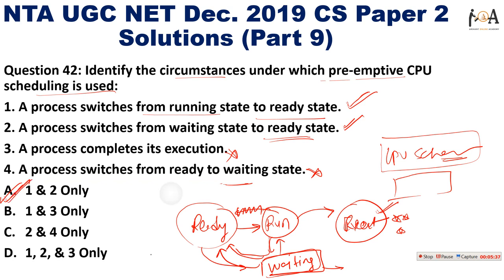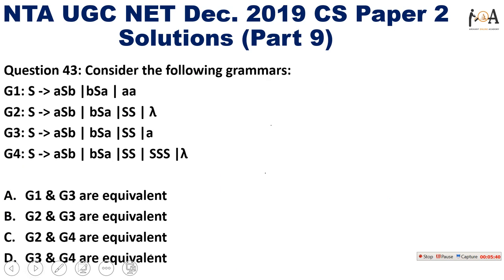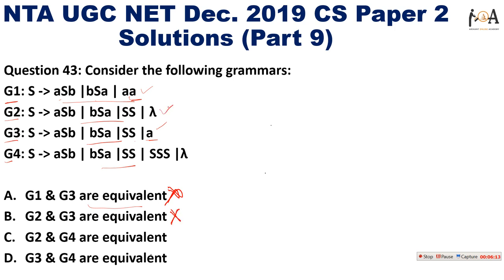The next question: consider the following grammars G1, G2, G3, and G4. We need to identify which are equivalent. Option A says G1 and G3 are equivalent — we can directly rule this out because G1 can only generate 'A', but G3 can generate 'AA', so they are not equivalent.